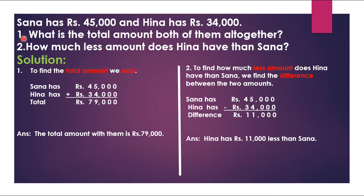Part one: what is the total amount both of them all together? Here we are adding the numbers to find the total amount. To find the total amount we add. Sana has rupees 45,000 — we write down this statement — and Henna has rupees 34,000.